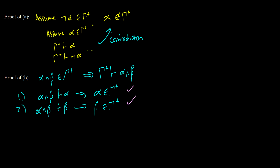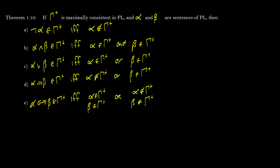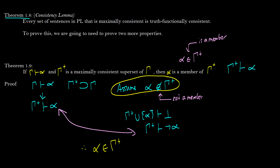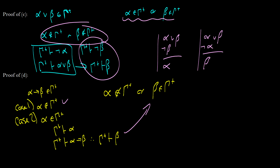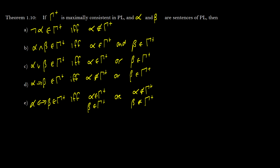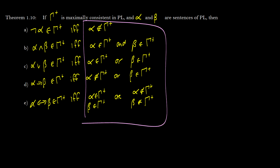We're going to use these results to prove theorem 1.8 in the next video, and we're going to use theorem 1.8 to prove theorem 1.2, which will prove completeness. As a reminder, theorem 1.8 says that every set of sentences in PL that is maximally consistent is truth functionally consistent. We did the truth functional part here — all these things are our semantics, not proofs. We'll come back with a full proof of completeness finally finished in the next video.